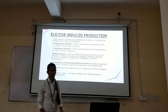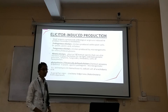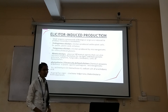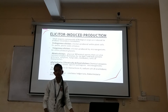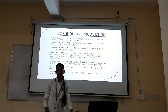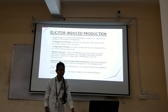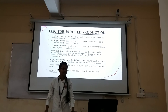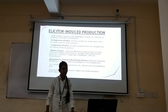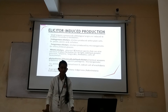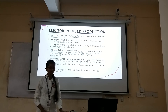Elicitor-induced production: elicitors are small organic compounds of biological origin induced to produce secondary metabolites. They are produced either by plants or by microorganisms. Elicitors produced within the plant cells are called endogenous elicitors, while those produced by microorganisms are exogenous elicitors.